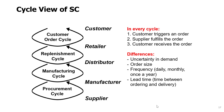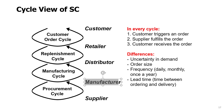Lead time may also differ. The customer receives units almost immediately. A retailer, when they order from the distributor, might have a one-week or two-day delivery time. When the distributor orders from the manufacturer, the manufacturer may deliver to the distributor in one month.